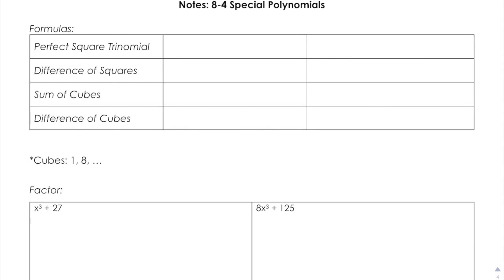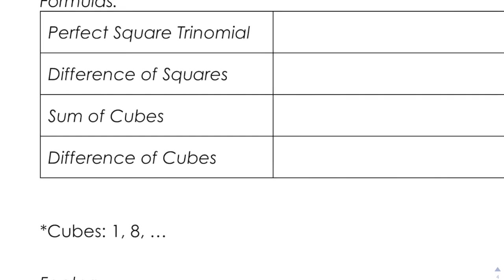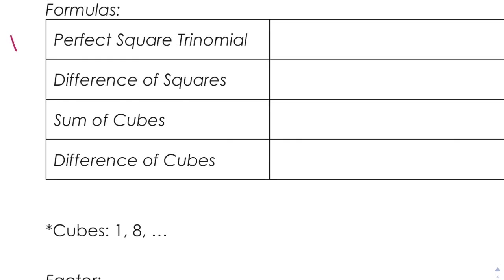So, special polynomials. We've talked about two special polynomials before, and one of those is a perfect square trinomial, or as you guys know, I like to call PST for short. The other one is a difference of squares.